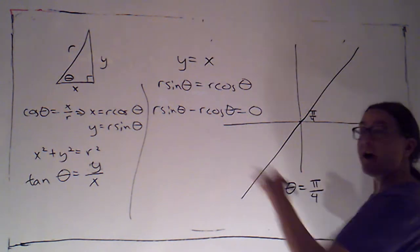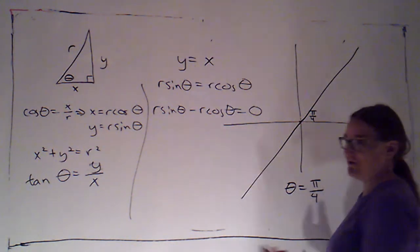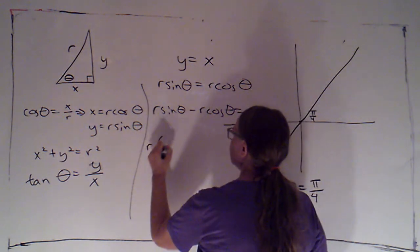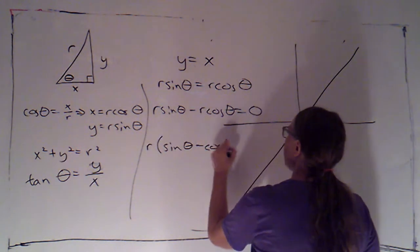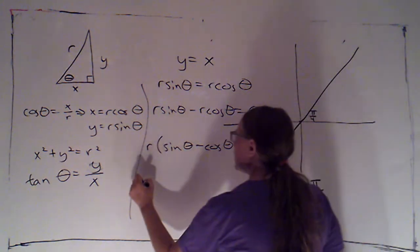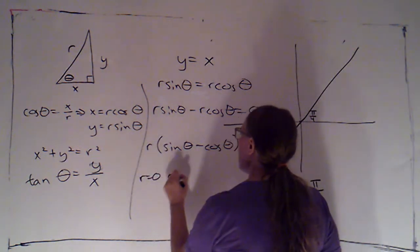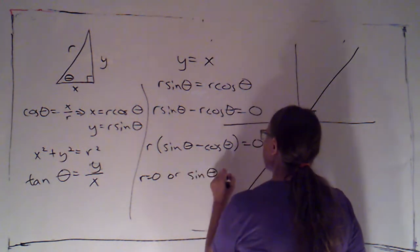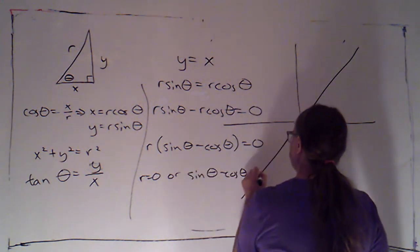So I'll have r sine theta minus r cosine theta equals zero. And now, rather than dividing out the r, I'm going to factor it out. We get r times sine theta minus cosine theta is equal to zero, which means either r is zero or sine theta minus cosine theta equals zero.